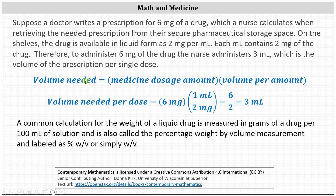This gives us the formula: the volume needed is equal to the medicine dosage amount times the rate in volume per amount of drug. Referring back to the example above, the prescription was for six milligrams and the rate in volume per amount is one milliliter per two milligrams of the drug. Notice when multiplying, the milligrams simplify out and we're left with six divided by two milliliters, or three milliliters, which is the volume for a single dose.